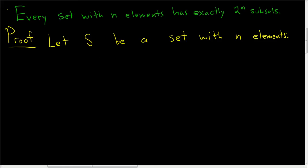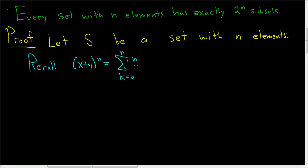The way we'll do it in this proof is to use the binomial theorem. Recall, if you take (x + y) to the n, that's the sum as k runs from 0 to n of n choose k, times x to the k, times y to the n minus k.